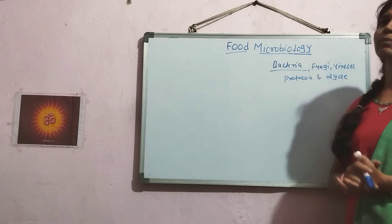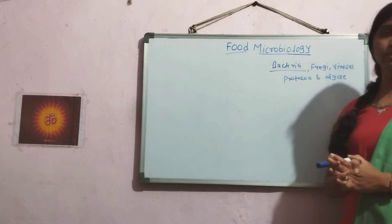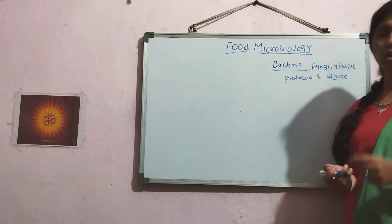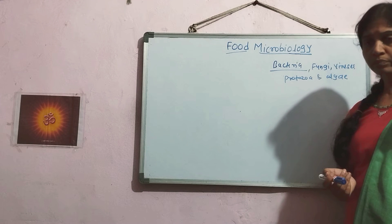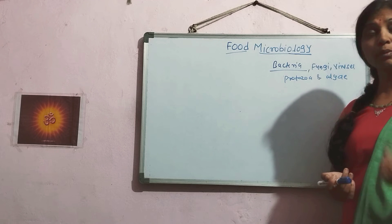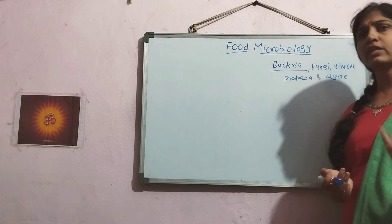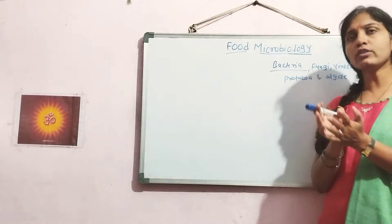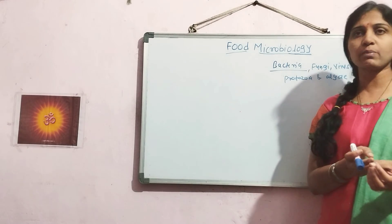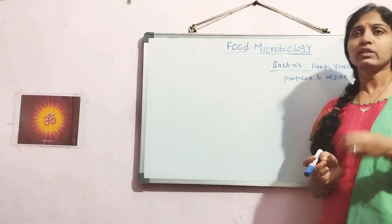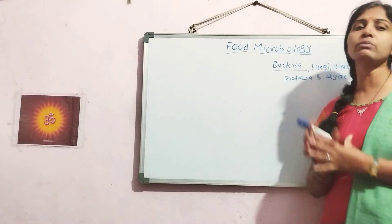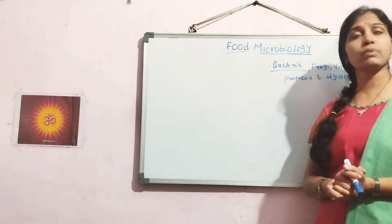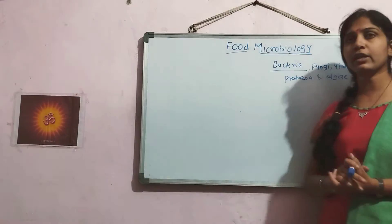The type of microorganisms associated with a food sample is totally dependent on the characteristics of that food — for example, the type of nutrients present, such as proteins or starches, as well as the general properties of the food such as pH and the temperature at which it is stored.